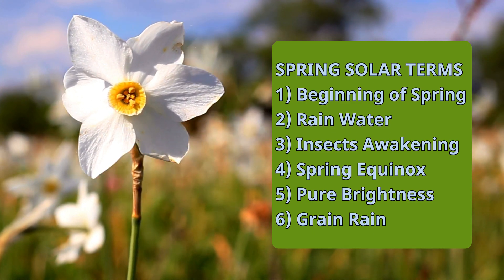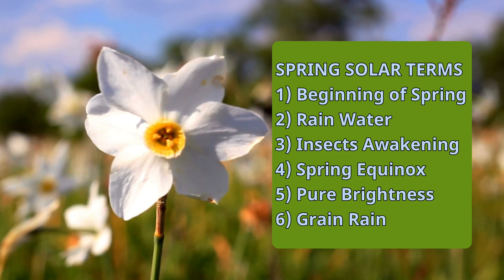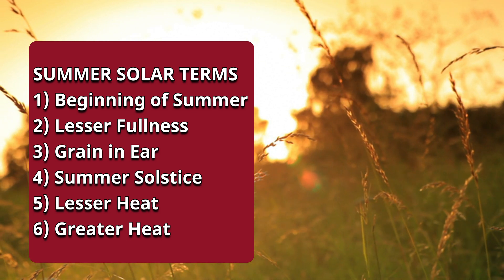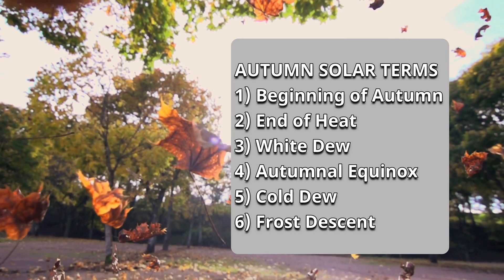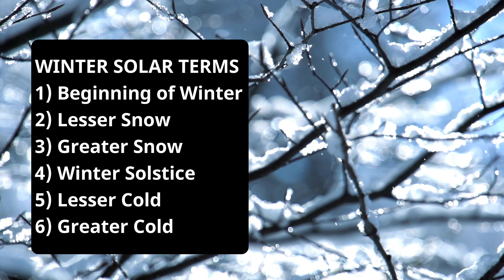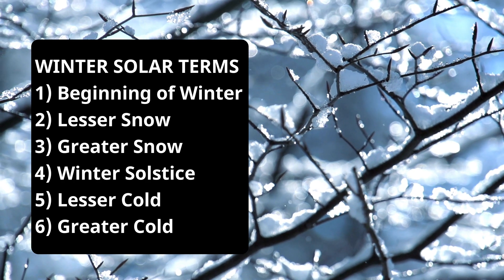Using the same logic, we divide a year into four seasons and 24 solar terms, so in each season there are six solar terms. In spring: beginning of spring, rainwater, insects awakening, spring equinox, pure brightness, and grain rain. In summer: beginning of summer, lesser fullness, grain in ear, summer solstice, lesser heat, and greater heat. In autumn: beginning of autumn, end of heat, white dew, autumnal equinox, cold dew, and frost descent. Lastly, in winter: beginning of winter, lesser snow, greater snow, winter solstice, lesser cold, and greater cold. It is also important to note that in the 24 solar terms, the start of spring, summer, autumn, and winter is a different date than that of the start of the seasons in Western culture.